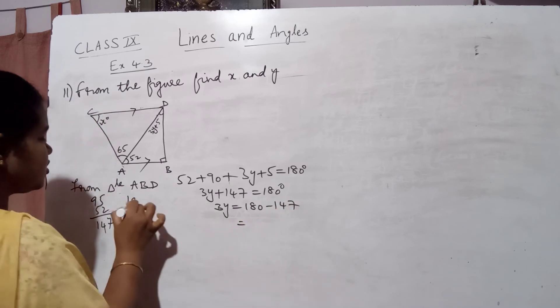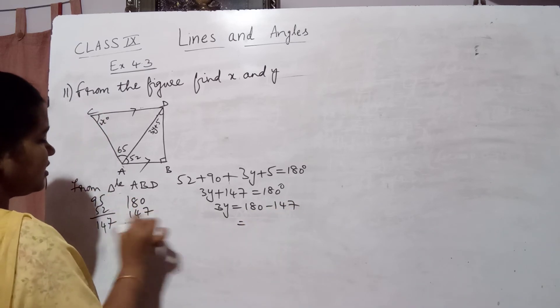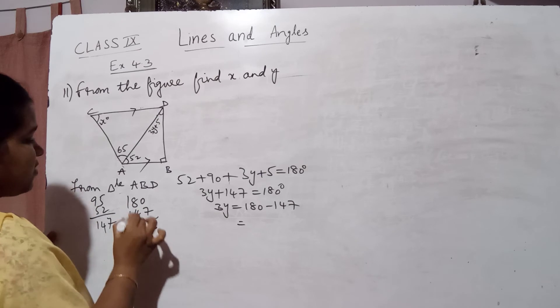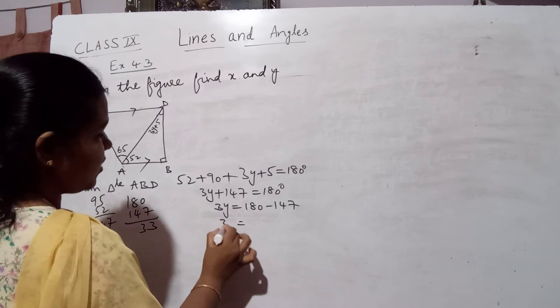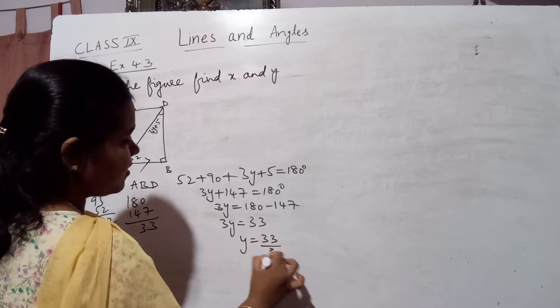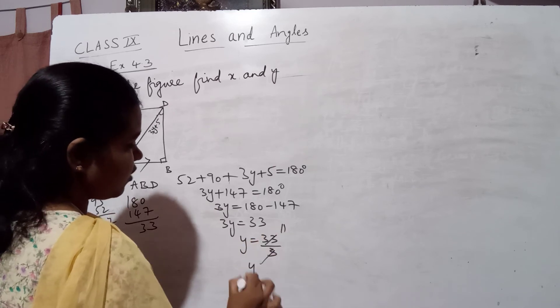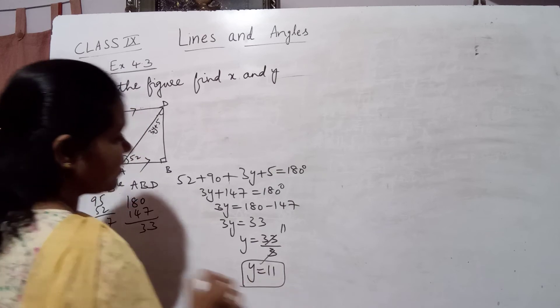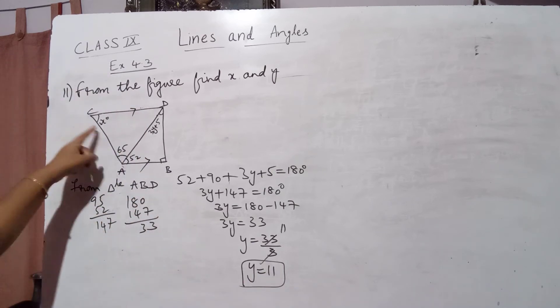180 minus 147: 10 minus 7 is 3, 7 minus 4 is 3, so 3y is equal to 33. So from this, y is equal to 33 by 3, so 3 ones are 3, 11s. I got y value as 11. Now next you have to find out the value of x.